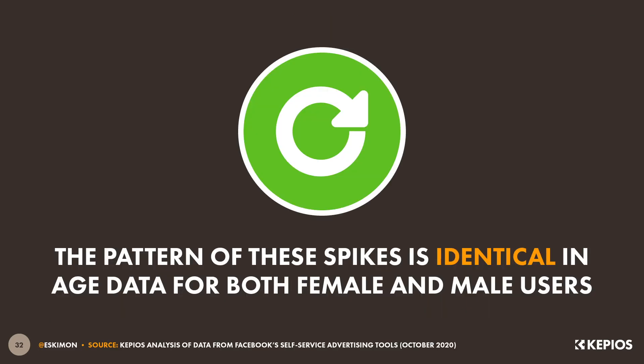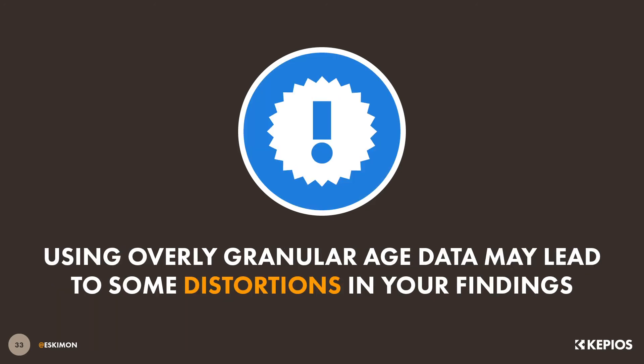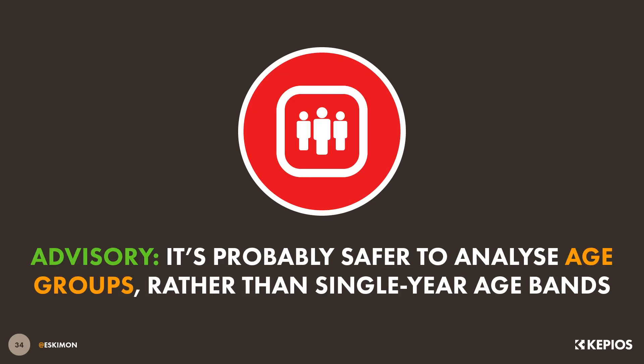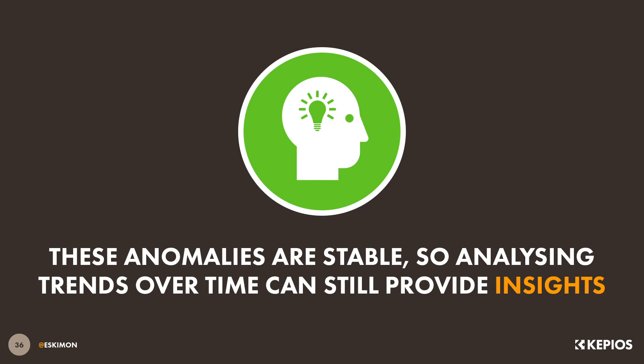Just in case you're curious, the pattern of these spikes is identical for both male and female users. But as a result of these anomalies, we need to be careful not to go down to too granular a level when analysing age data from these platforms. My advice would be to focus on broader age groups when analysing social media data, rather than trying to analyse the data by single year age bands. However, these anomalies have remained relatively stable over the past few years, so we can still draw representative insights from how these numbers evolve over time.